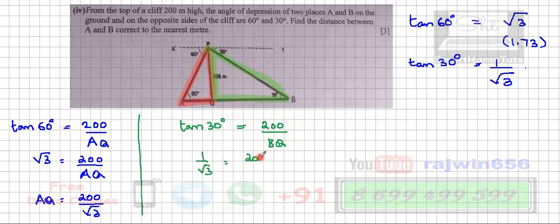Is equal to 200 upon BQ. I'll just simply do the cross multiplication. BQ will come over here on the left hand side, so BQ is equal to root 3 will come over here. This is going to become 200 root 3.